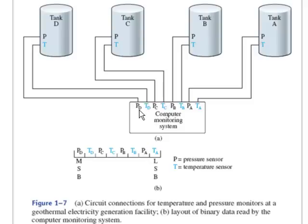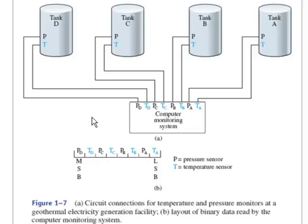The most significant bit is the pressure in tank D. The next bit is the temperature in tank D. The least significant bit on the right is the temperature in tank A. If you lay that out in an 8-bit chart like in figure B, TA sits in the LS bit and PD sits in the MS bit. For example, if the string had the number 02 in hexadecimal, 0 would be 0000 and the 2 would be 0010 — that means we have a high pressure in tank A.